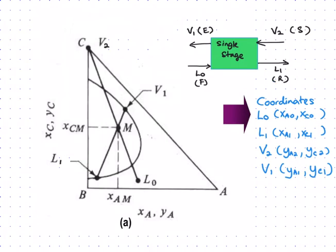But L1 and V1, or you can call them as the raffinate stream and extract stream, they have gone through the process, so the product should be in equilibrium. Therefore, when you label your V1, it should be on the equilibrium curve. When you label your L1, it should be on the equilibrium curve.